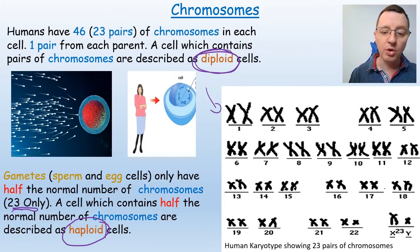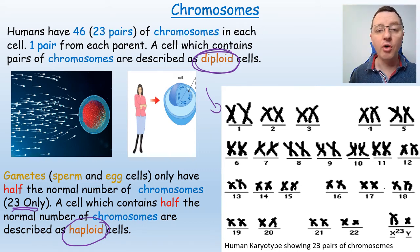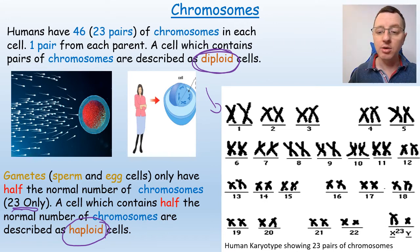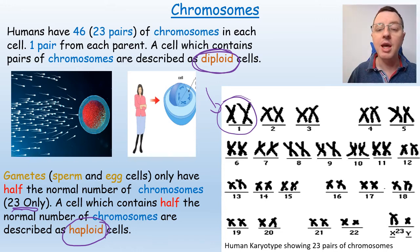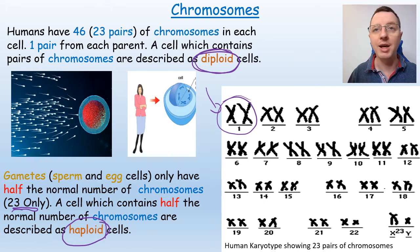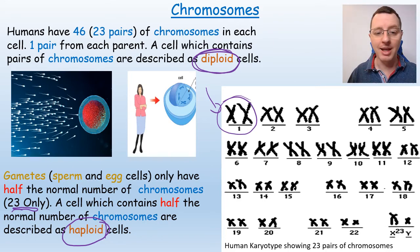Here you can see something called a karyotype. A karyotype is in effect a photograph of all the chromosomes in a cell. They've been cut out and rearranged to show the pairs of chromosomes, and you can see there are 23 pairs. Pair number one is the tallest and longest, and pair number 23 is the smallest and shortest. The 23rd pair are known as the sex chromosomes — there are two forms: the X and the Y. If you have an X and a Y then you are male; if you have an X and an X then you are female.